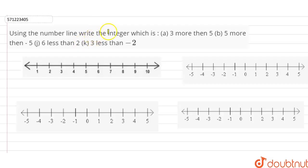Hi students, our question is using the number line, write the integer which is 3 more than 5, 5 more than minus 5, 6 less than 2 and 3 less than minus 2.